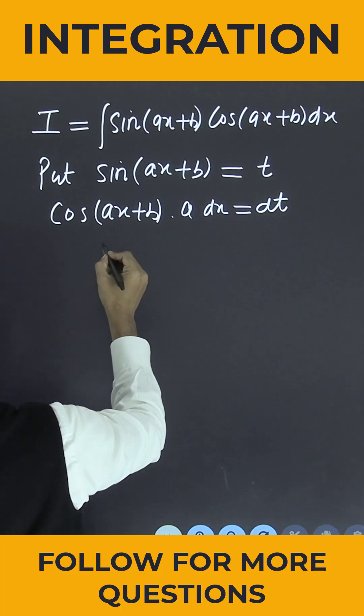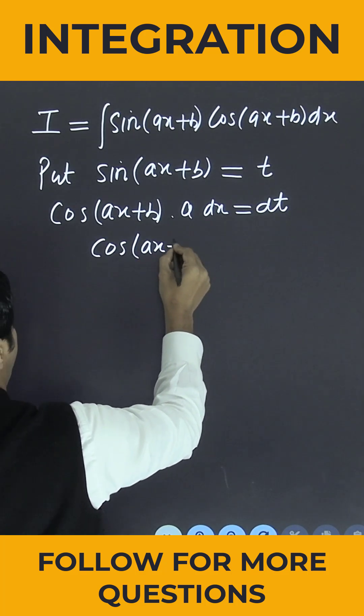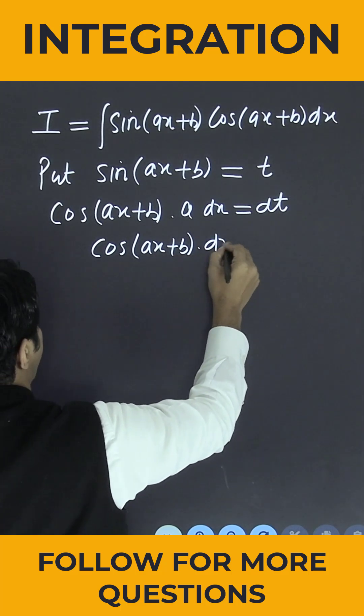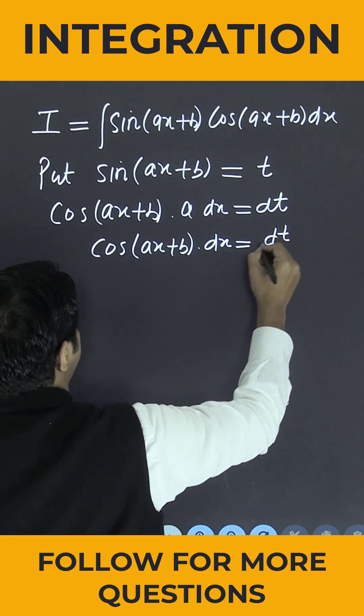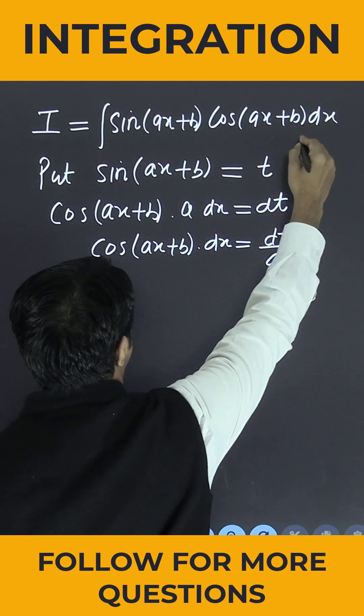So what is the requirement? cos of ax plus b into dx is nothing but dt by a. Put this in the above integral.